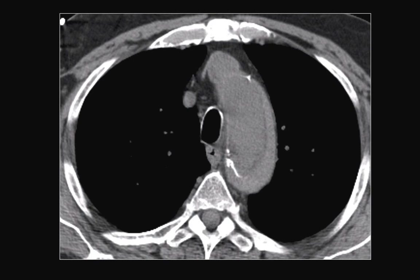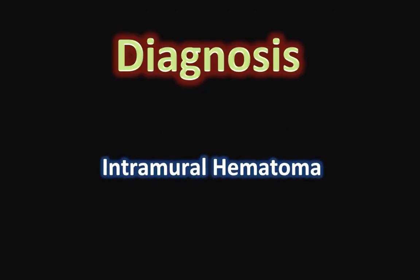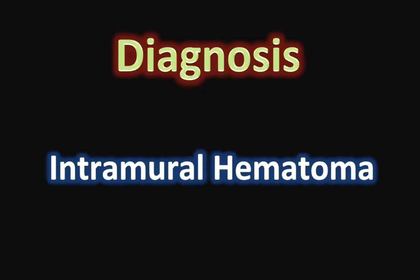This is a non-enhanced CT scan showing medial displacement of the intimal calcifications. What was seen on the contrast-enhanced image as a peripheral hypodense rim appears as a peripheral hyperdense rim on this non-enhanced image. This concludes the diagnosis as intramural hematoma.